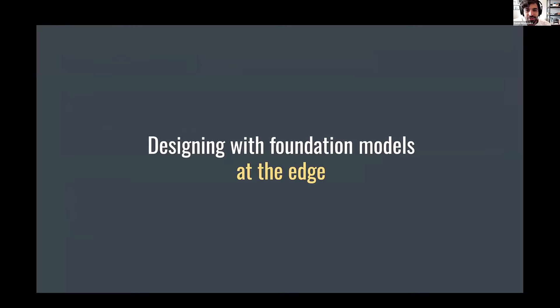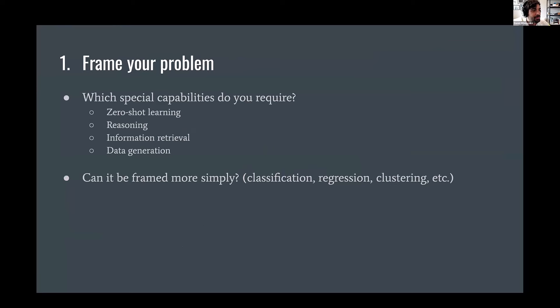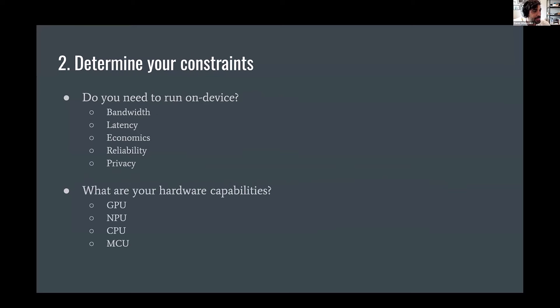So with all that in mind, I wanted to go through some quick tips for designing with foundation models at the edge. So the number one would be to frame your problem. And this is kind of a workflow step by step. So first, which of those capabilities do you actually need? Do you need zero-shot learning? Do you need data generation? Can you actually frame your problem more simply as a classification problem or a regression problem? And do some of this work during your data generation, for example, so you don't need to deploy the big model? Then figure out your constraints. Do you actually need to run on the device? I'm a big fan of the BLURB framework here for understanding that. Do you actually need to run on device? If not, maybe it makes life simpler to do it in the cloud. If you are on device, what are your capabilities?